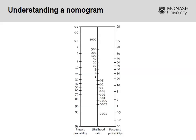Here we have a nomogram, and hopefully I'll make it as simple as possible. On the left-hand side we've got our pre-test probability — you would plot in whatever the prevalence of the condition may be. Say it's 0.1% of people in country X who have this particular condition. We've got a likelihood ratio in the middle — say the likelihood ratio of this test if you test positive is 15. You draw a straight line and you end up with your post-test probability, in this case around 5%. So it's gone from 0.1% all the way up to 5%.